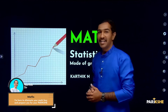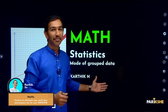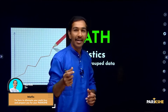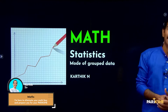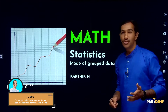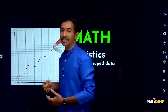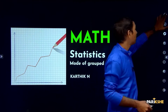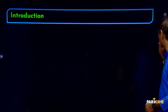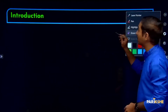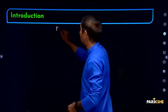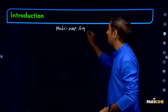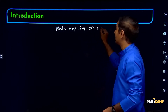The first topic is statistics. The first topic is mode of grouped data. Mode is for ungrouped data — what is mode? Mode is the most frequently repeating or occurring observation. Mode can be defined as the most frequently occurring observation.